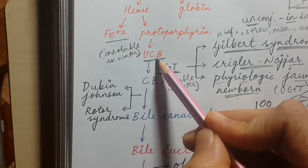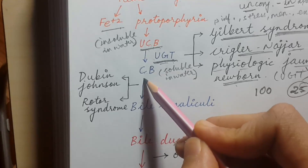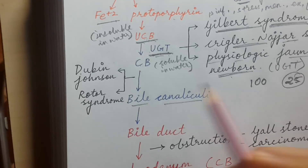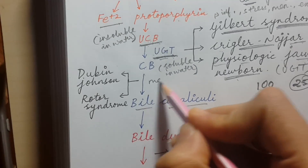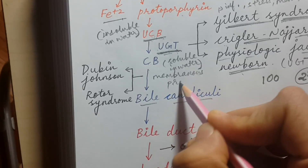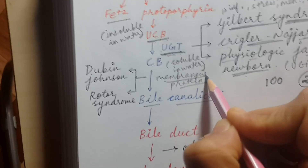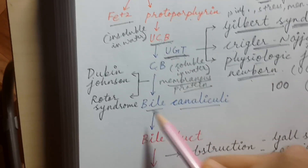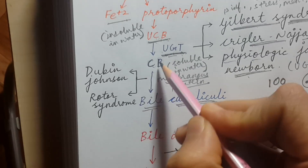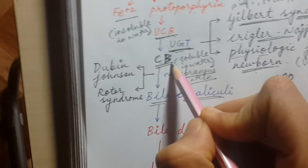From unconjugated bilirubin, conjugated bilirubin is made in hepatocytes, then transported into bile canaliculi. This requires a membranous transport protein. If there is a defect in this protein, conjugated bilirubin cannot be transferred into bile canaliculi and will build up within the hepatocytes, causing jaundice.